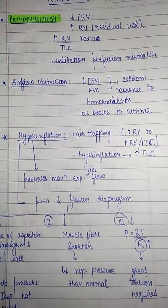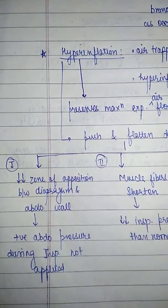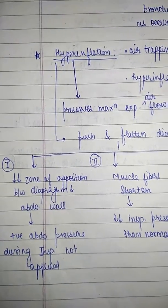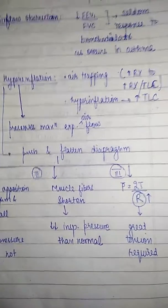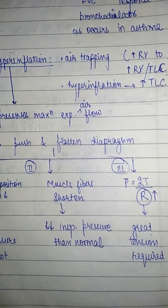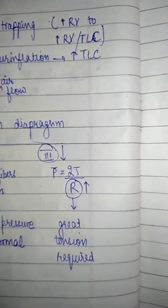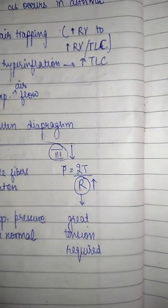Hyperinflation will push and flatten the diaphragm. Three things happen: there is decreased zone of apposition between the diaphragm and abdominal wall; positive abdominal pressure during inspiration would not be applied; and the flattened diaphragm will have short muscle fibers, decreasing inspiratory pressure. As pressure equals 2T/R, as the radius of the flattened diaphragm increases, more tension is required to produce the same pulmonary pressure.